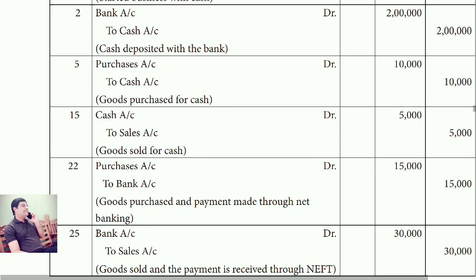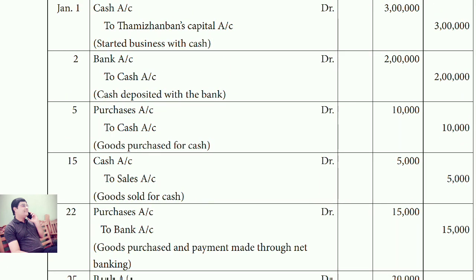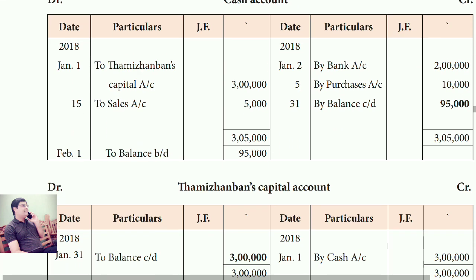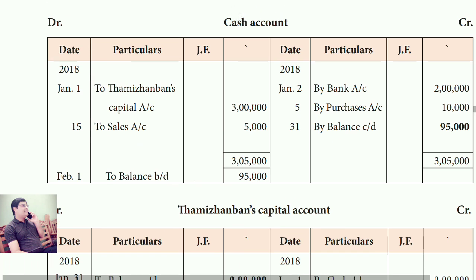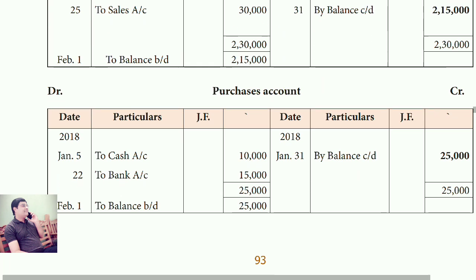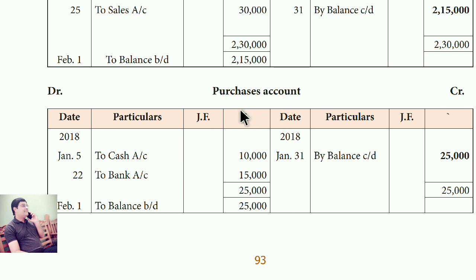Date 5: Purchase account debit, to cash account. In purchase account, write 'To cash'. In cash account, write 'By purchase'. Now open the purchase account. In purchase account you have to write 'To cash'. If the purchase account has already been opened, no need to open it again; if not opened yet, you have to open it.